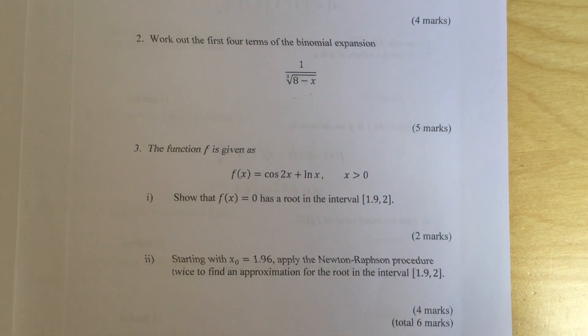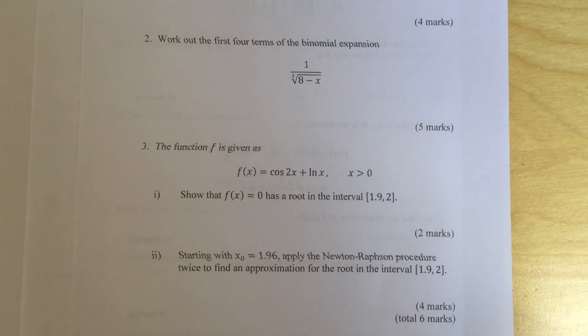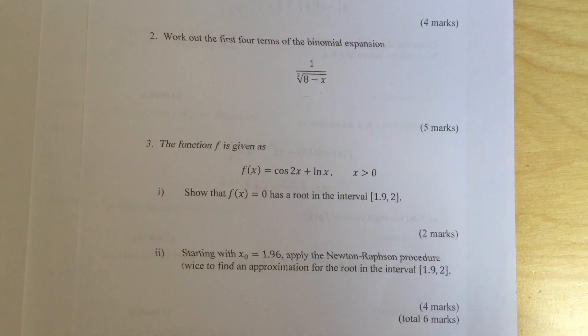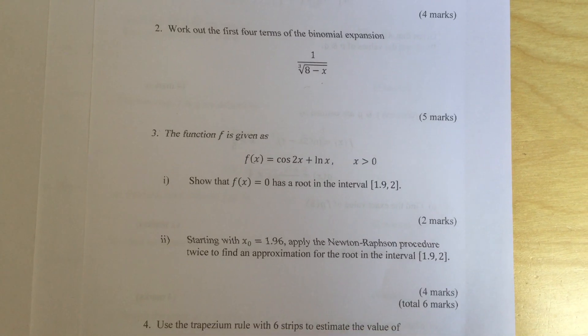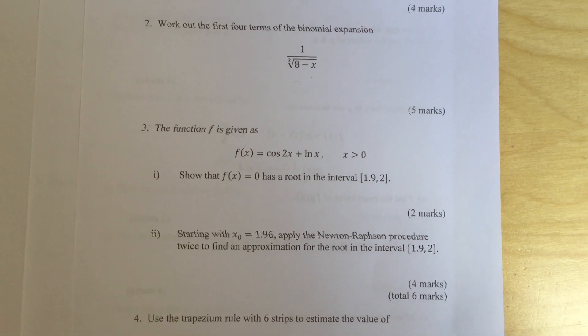Question 3: The function f is given as f of x equals cos 2x plus ln x, x is greater than 0. Part 1: Show that f of x equal to 0 has a root in the interval 1.9 to 2.